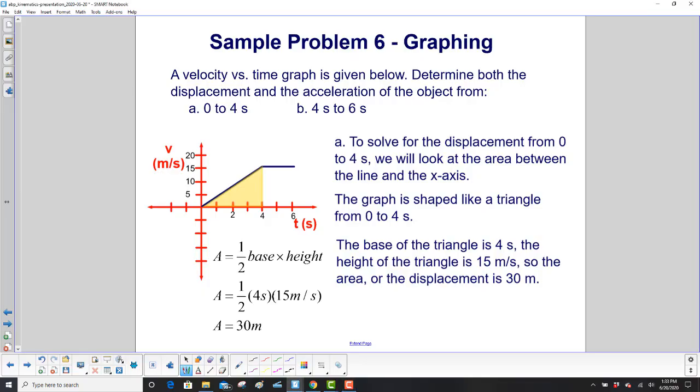To solve for the displacement from 0 to 4 seconds, we'll look at the area between the line and the x-axis. So that is this piece right here, highlighted in yellow and now surrounded by purple ink. That's a triangle. The base of the triangle is 4 seconds. The height is 15 meters per second. So the area or the displacement is 30 meters.